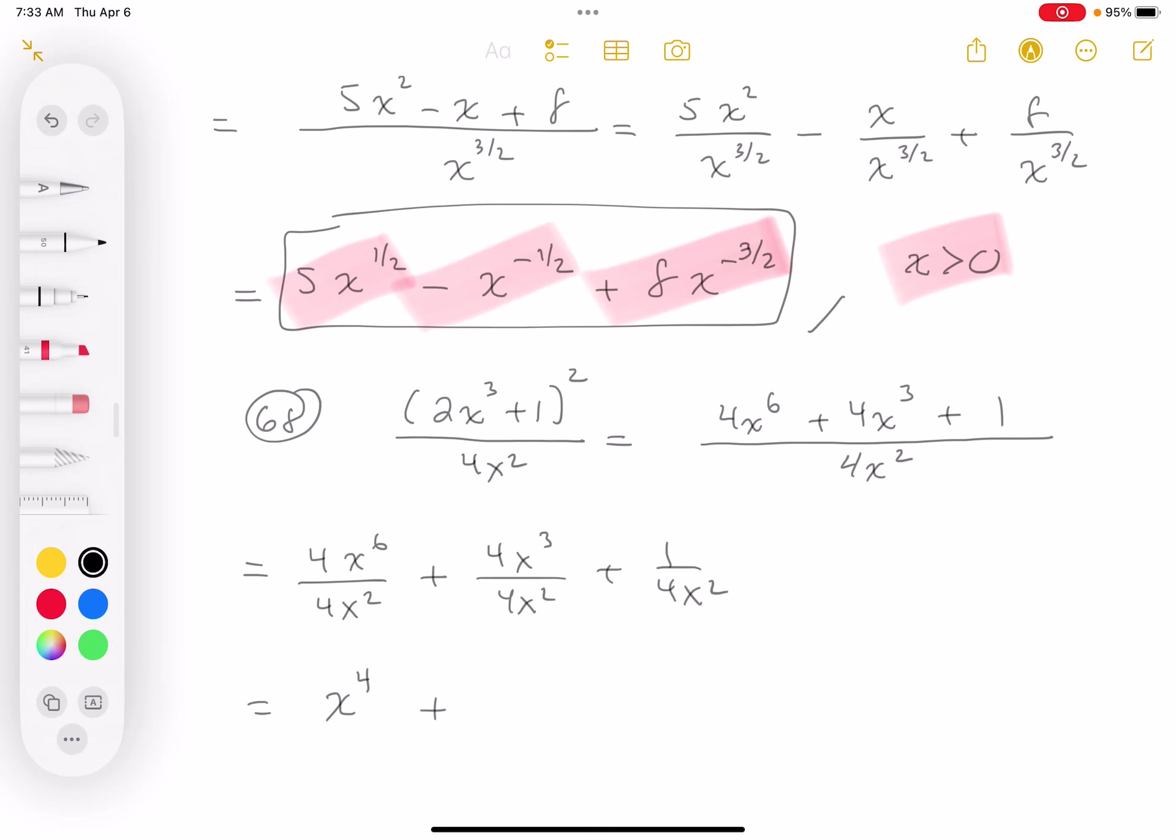Plus 1/4, and it's going to be x⁻². Now I'll put a box around this. I do want to write the restriction down. The restriction here is x cannot equal 0.